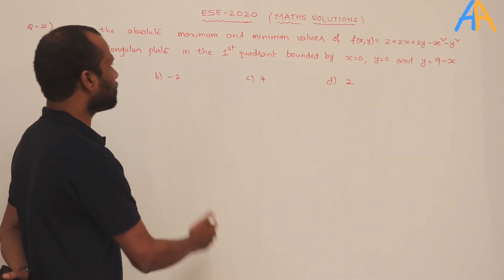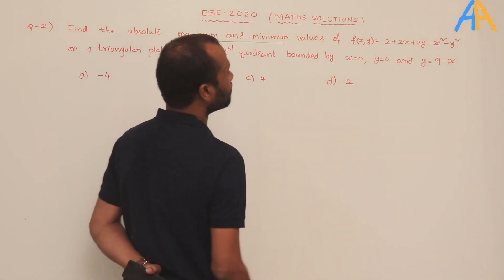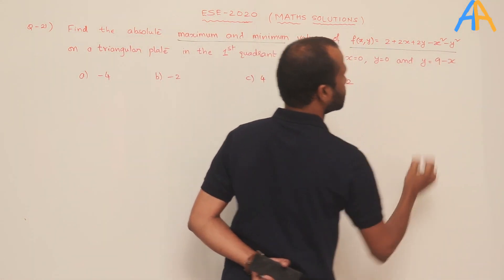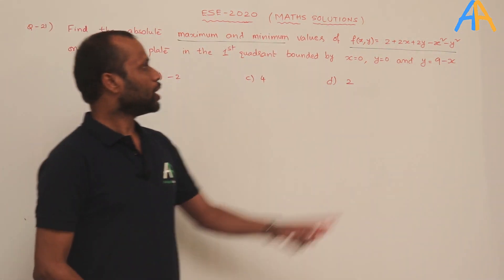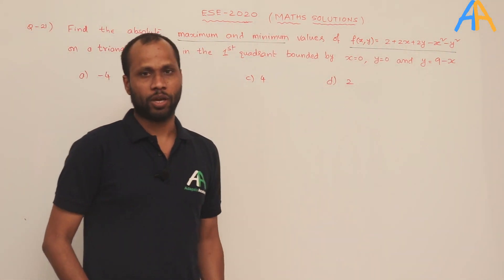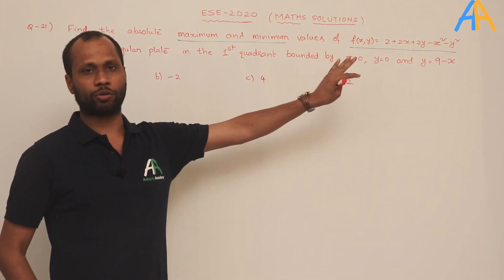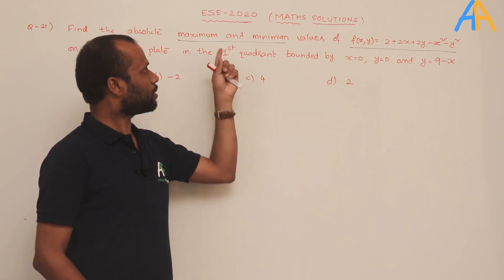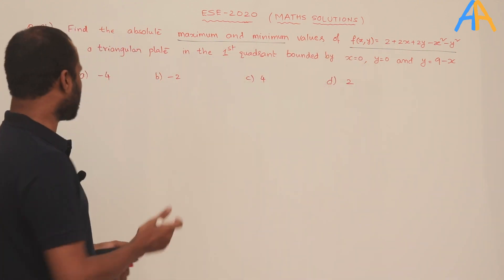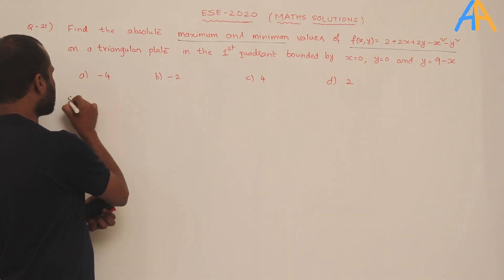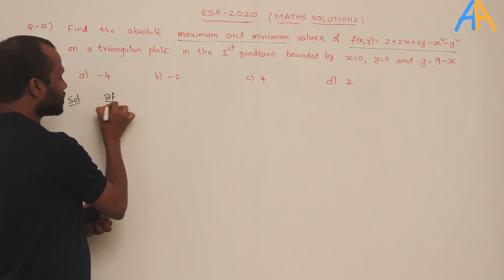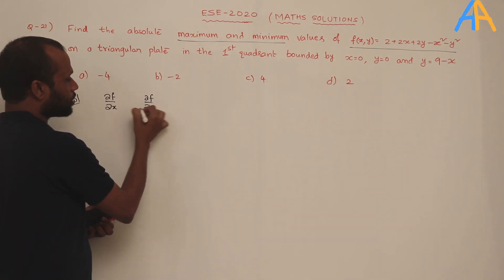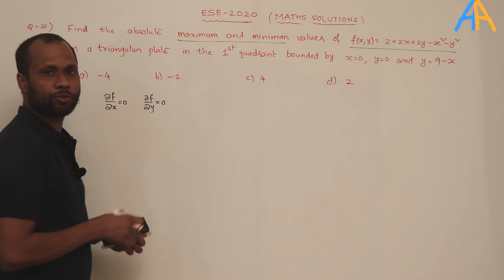This is a maximum-minima problem. The given function f(x,y) = 2 + 2x + 2y − x² − y² is a function of two variables x and y. To find maximum and minimum for two variables, we need to find the first derivatives ∂f/∂x and ∂f/∂y and set both equal to zero. Solving these two equations gives the extremum point.